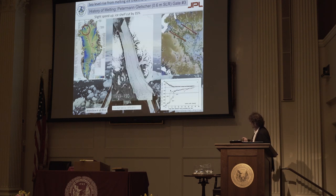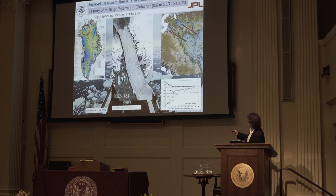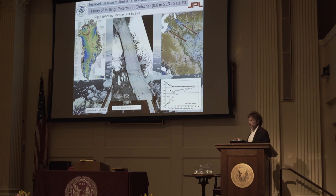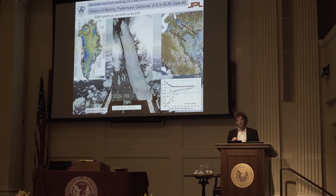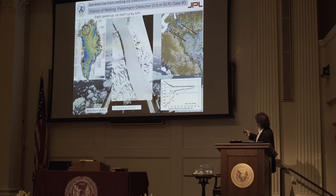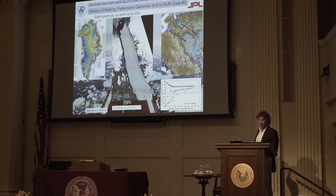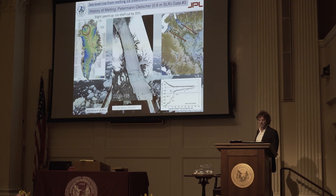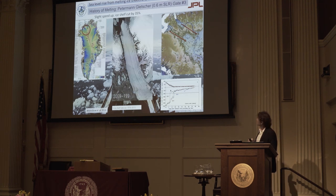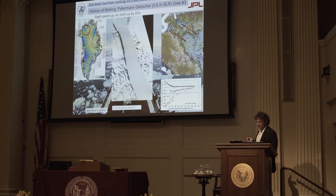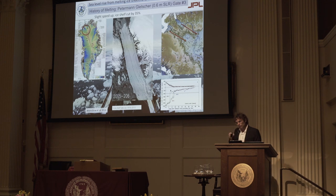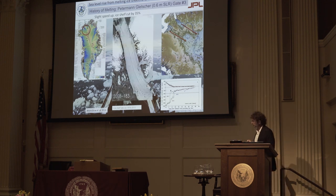The last gate is the Petermann-Humboldt Glacier, where the ice front was very stable until first explored in 1901. In 2010, we saw 35% of the ice shelf disappear in a few calving events because the ice shelf got thinner and cracked more easily. Not much change there yet, but we have a flapping door on the floodgate of Petermann Glacier.